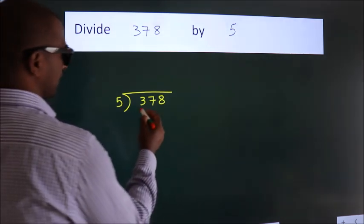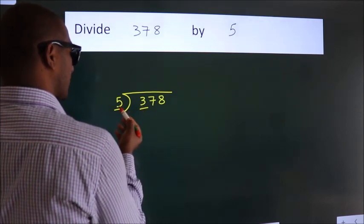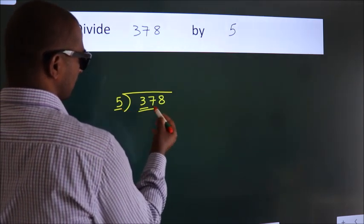Next. Here we have 3. Here 5. 3 is smaller than 5, so we should take 2 numbers. 37.